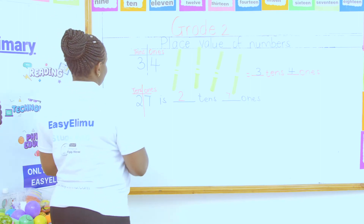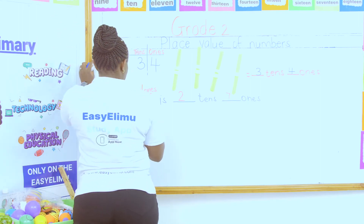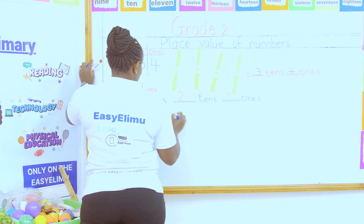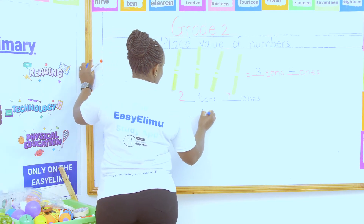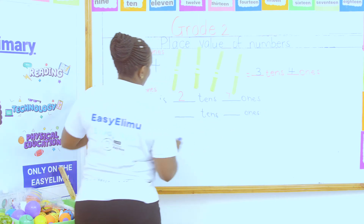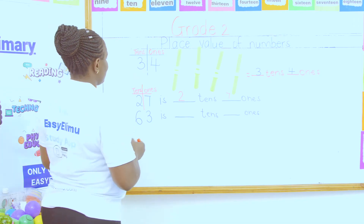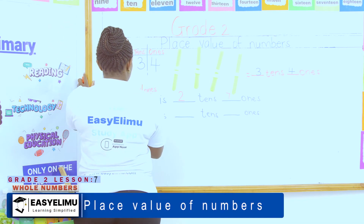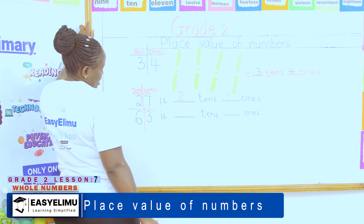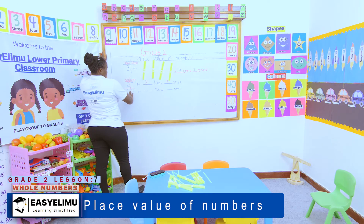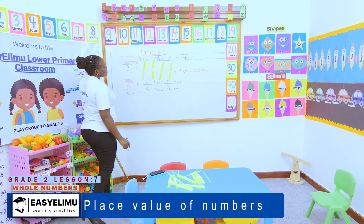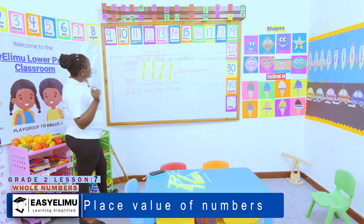Now someone tells me: write this number using place value. What is 63? 63 equals dash tens and dash ones. We use the place value chart — how many ones and how many tens do we have? We have three ones and six tens.